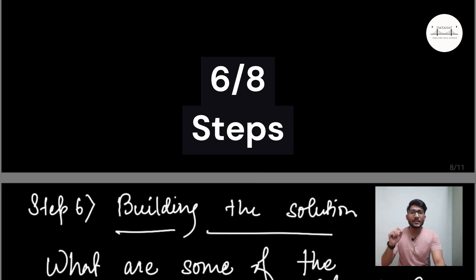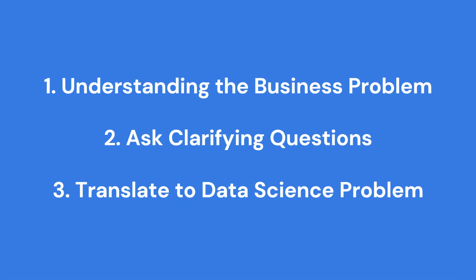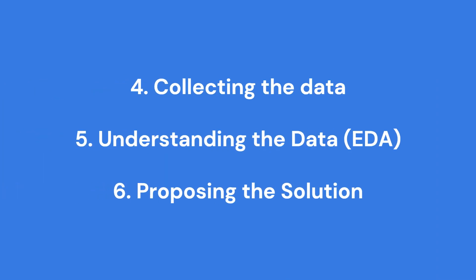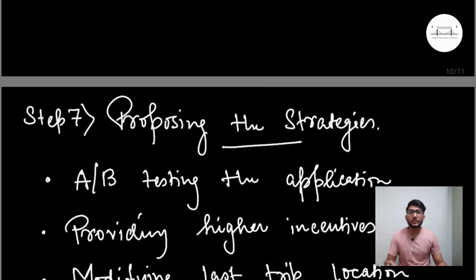So those are six primary steps of the framework. Let us recall them: first, understanding the business problem; second, asking clarifying questions; third, structuring the problem by translating the business problem to a data science problem; fourth, collecting the data; fifth, understanding the data; and sixth, proposing the solution. The seventh step involves proposing various strategies that could help reduce the churn rate. Here you need to think from the business perspective — your business thinking and capability to understand the business context becomes vital.